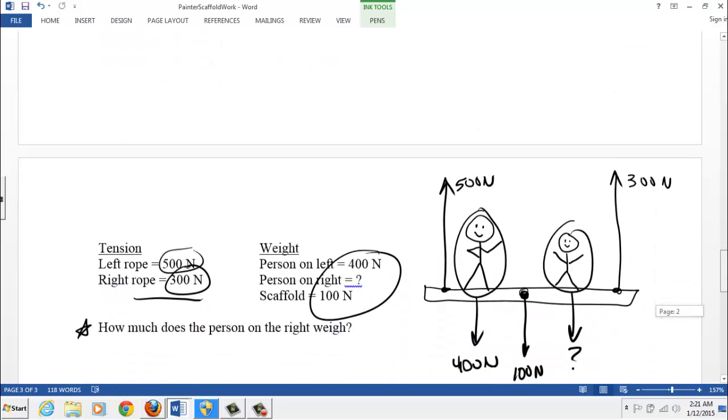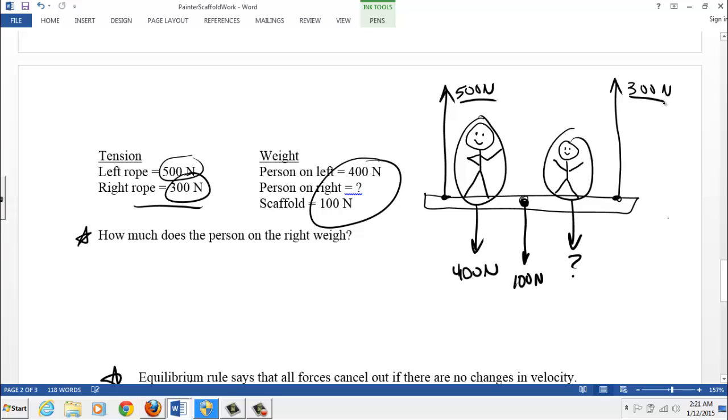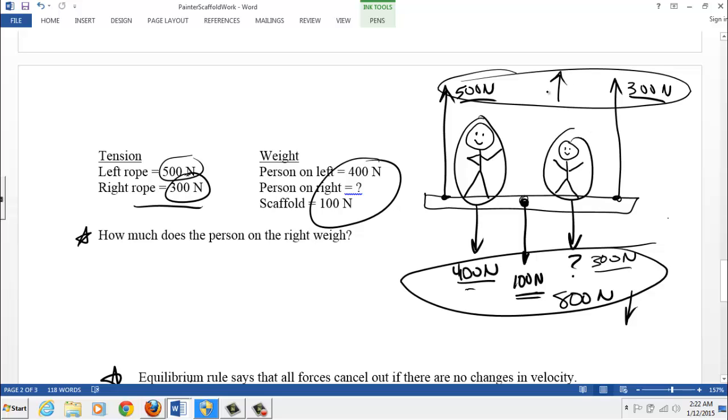There you go, the person on the right weighs 300 newtons. He has to. If you somehow measure the tension on the ropes and the measurements are 500 and 300, and you independently measure this guy to be 400 newtons, weigh the scaffold, that's 100 newtons, the only way for these people to remain at rest is for this person to weigh 300 newtons. Yep, because 400 plus 100 is 500, plus 300 is 800 newtons pointing down, and then the tension force pulling up is 500 plus 300, that's also 800. Yep, the forces are canceling out. Thanks for watching.